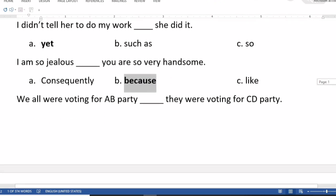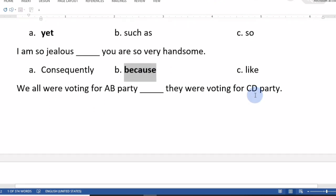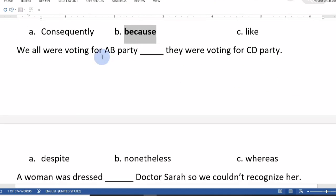We all were voting for AB party, they were voting for CD party. The options are instead, similarly, or such as. Whereas is the right option.